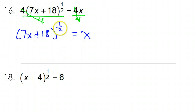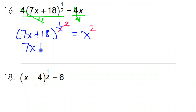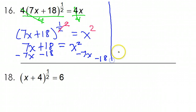Now we will do the reciprocal power to make this exponent go away. The reciprocal of 1/2 is 2, so I will square both sides of the equation. These 2s will cancel each other out, so I will just have 7x plus 18 is equal to x squared. I see I have an x and an x squared, so I'm going to get everything on one side. I like my x squared to stay positive, so I'm going to subtract 7x and subtract 18 from both sides. That's going to leave me with 0 equals x squared minus 7x minus 18.